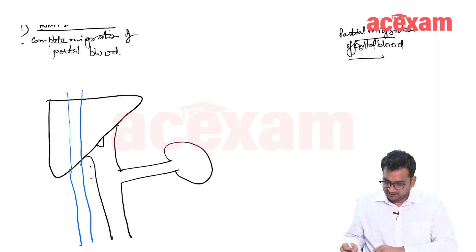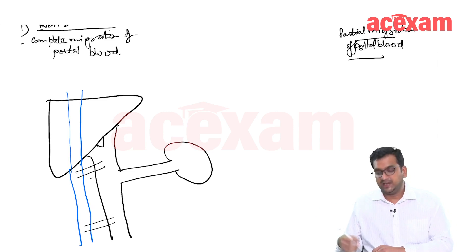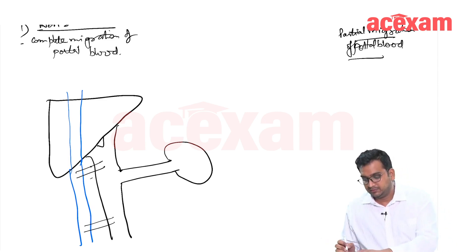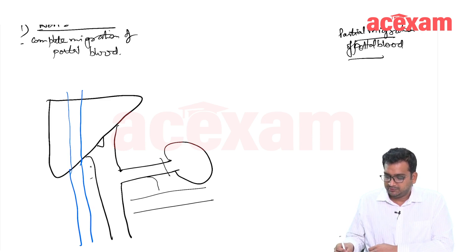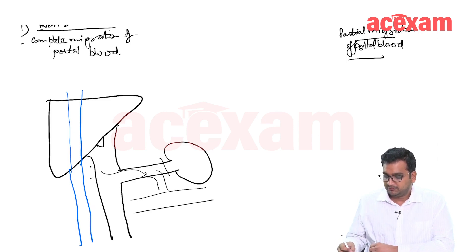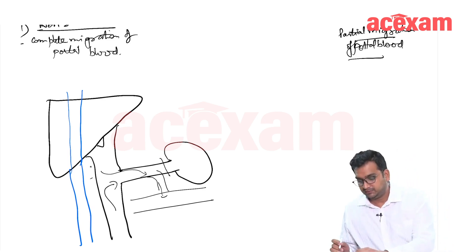Or if there is communication between the mesenteric vein and IVC — the portal caval or mesenteric caval shunt — that is also a type of non-selective shunt. And if this is the renal vein, if we are doing a splenectomy and the splenic vein is going towards the renal vein and we are connecting them, then all portal circulation blood can go into the renal vein — so this is also a type of non-selective shunt.